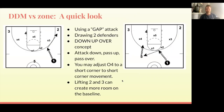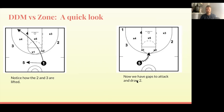Now let's take a look at how you use the gap attack. You can have your one get a little wider, and your five can space out even more. You want to draw two defenders and use the down-up-over concept — you attack down, pass up, and pass over. You can adjust your post offensive player (four in this diagram) to a short-corner movement, and you can lift your two and three to create more room on the baseline. Let's take a look at how lifting can help you.